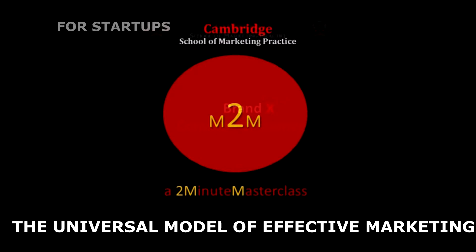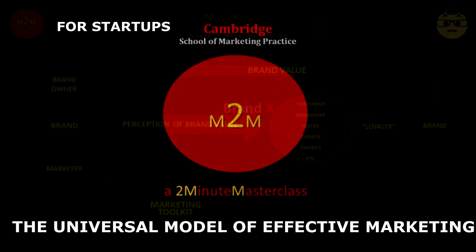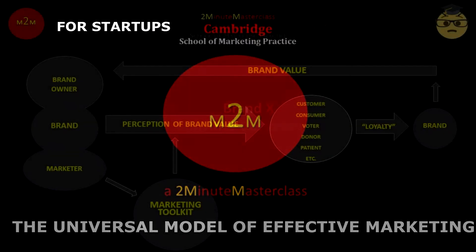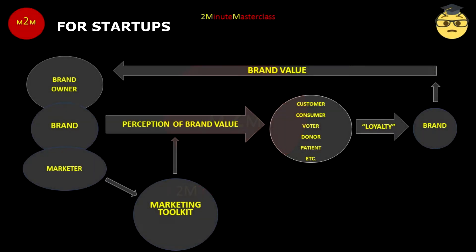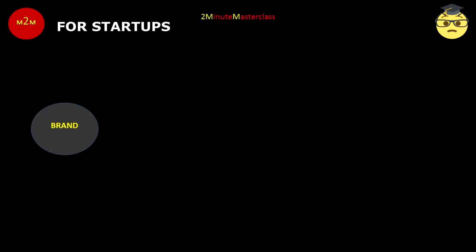All our classes set out to be different, and this class is no exception. It focuses on one academic model — a model of effective marketing. It is also unusually exactly two minutes long. All I will do will be to comment on the model as it develops on screen. You decide how to use it: for guidance, for debate, or as a challenge to teachers. If you find it helpful, use it. If not, move on to more practical stuff.